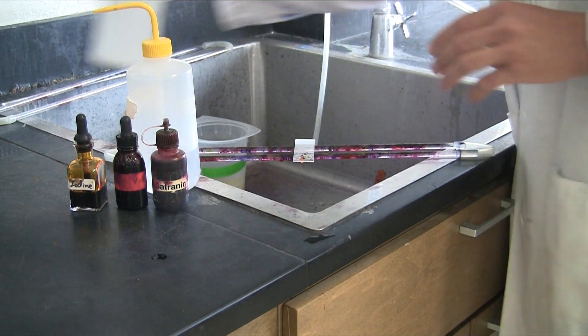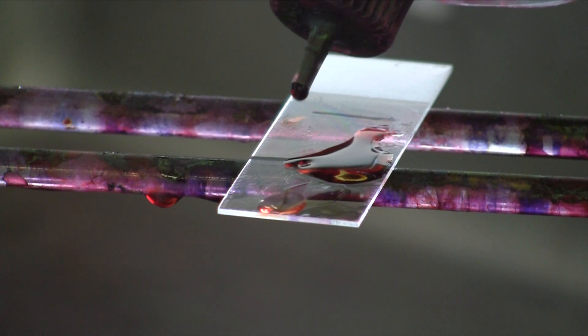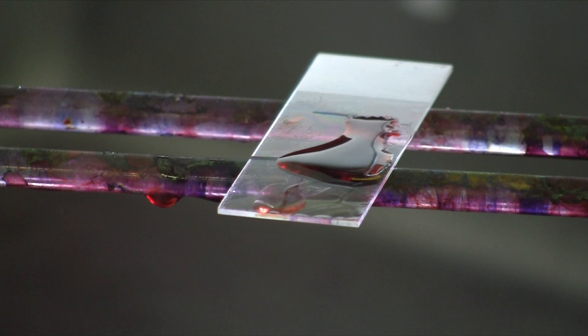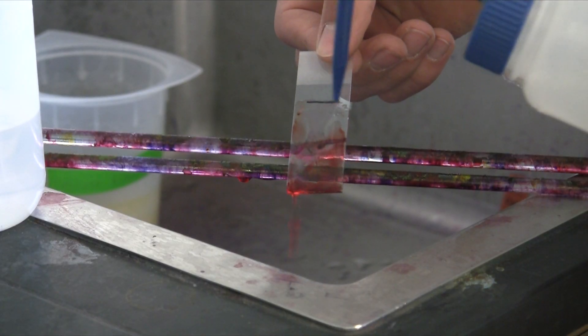At this point, we're ready to counter stain. The counter stain is saffranin. Add that stain on and let it sit for 30 seconds. Those Gram negative cells that lost their stain, their primary stain, will now take on the saffranin.